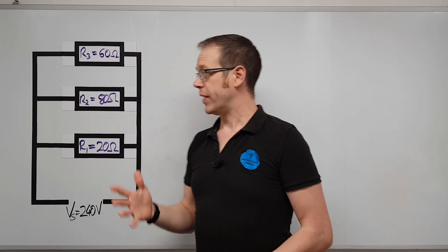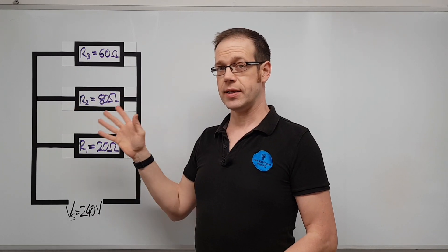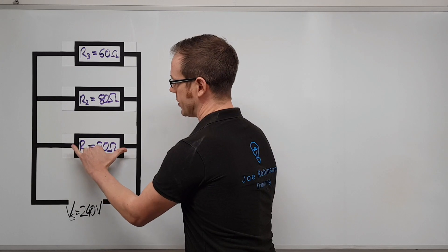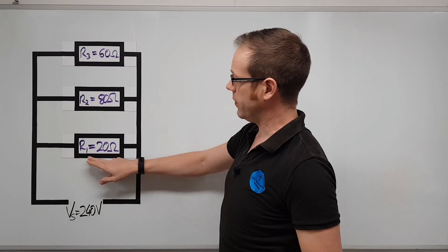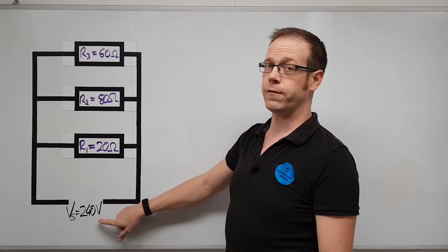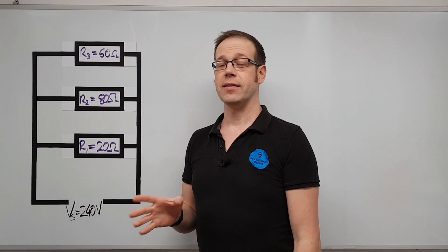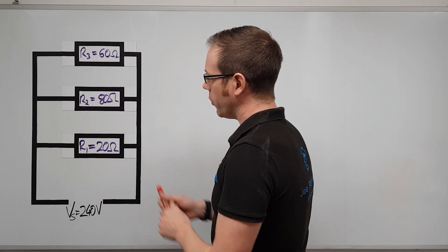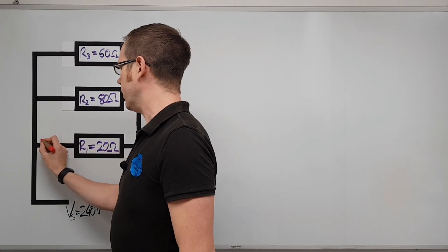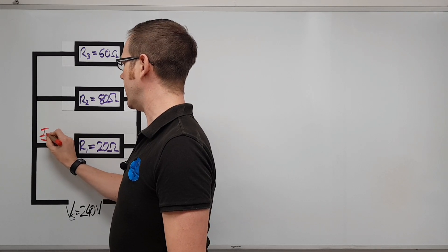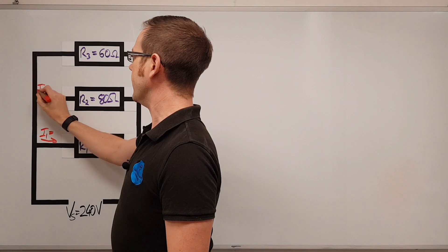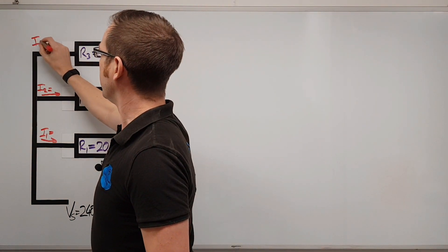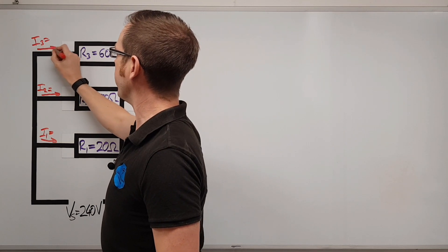Step one is to calculate the individual currents flowing into each resistor. Because this is a parallel circuit, the voltage applied at the supply is the same across each resistor — 240 volts. So we want to find I1 (current into R1), I2 (current into R2), and I3 (current into R3).